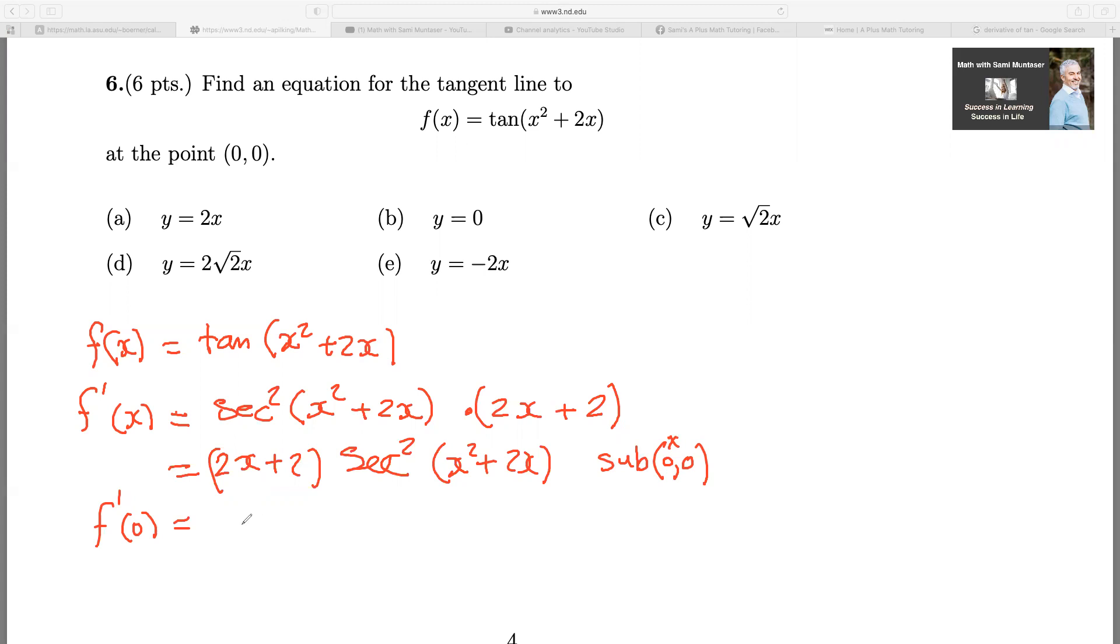So f prime of 0 equals 2 times 0 plus 2, secant squared of 0 squared plus 2 times 0, which gives you here 2 secant squared of 0.